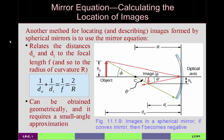If you prefer algebra over geometry, use the spherical mirror equation: 1/DO + 1/DI = 1/F = 2/R, which relates the object distance, image distance, and focal length (or radius of curvature). This equation can be derived geometrically using a small angle approximation.